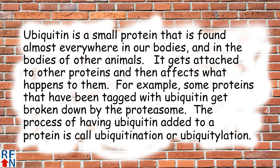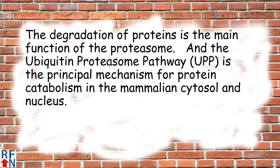Ubiquitin is a small protein that is found almost everywhere in our bodies and in the bodies of other animals. It gets attached to other proteins and then affects what happens to them. For example, some proteins that have been tagged with ubiquitin get broken down by the proteasome. The process of having ubiquitin added to a protein is called ubiquitination or ubiquitylation. The degradation of proteins is the main function of the proteasome, and the ubiquitin proteasome pathway, or UPP, is the principal mechanism for protein catabolism in the mammalian cytosol and nucleus.